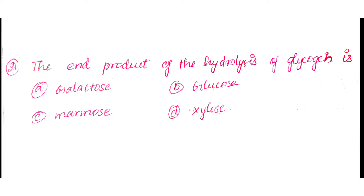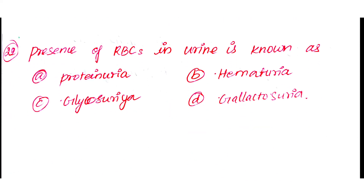Question number 22: Presence of RBC in urine is known as. Option A: Proteinuria. Option B: Hematuria. Option C: Glycosuria. Option D: Galactosuria. The answer is Option B: Hematuria.